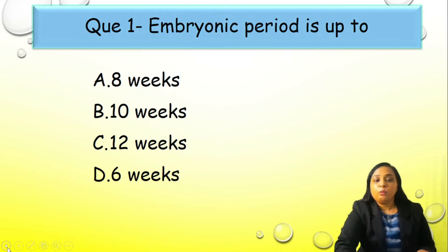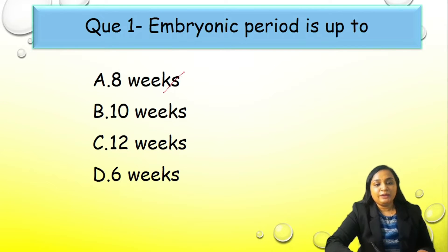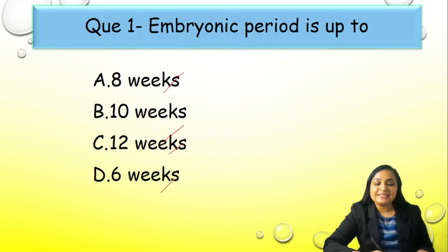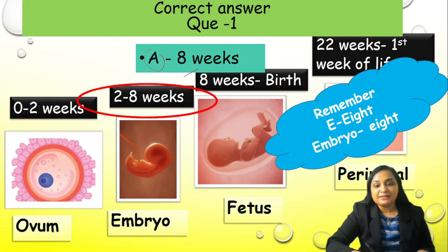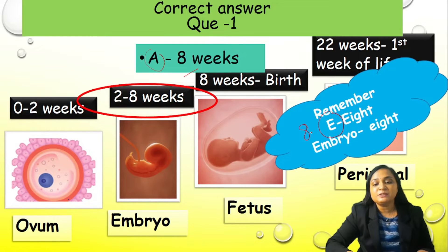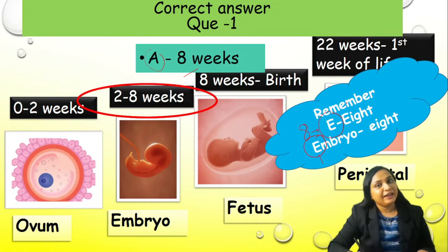Question number 1: Embryonic period is up to — options were A) 8 weeks, B) 10 weeks, C) 12 weeks, or D) 6 weeks. Correct answer is option A, 8 weeks. For easy remembering: 'E' for Eight and 'E' for Embryo — EE, Embryo 8.